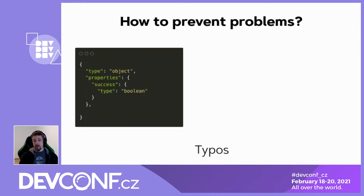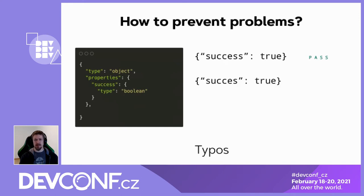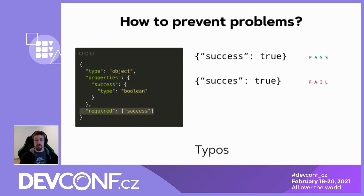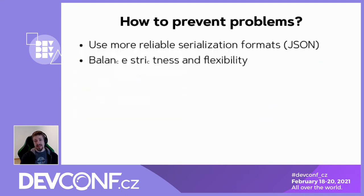We can also prevent typos. Here we have a schema that accepts an object with the success key, and expectedly this value passes. But a success result missing the last letter will also work, and it's not what we might expect. So to solve this, we can add the list of required fields. Or alternatively, we can restrict additional properties. So by balancing strictness and flexibility, you can prevent some erroneous inputs.